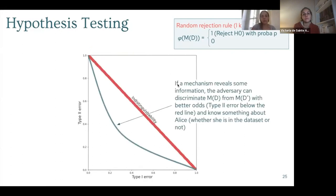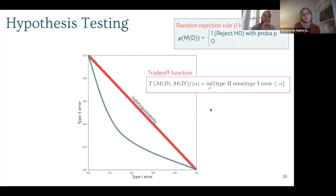If you know something about the dataset, your error may decrease. The lower bound of the achievable errors is called the trade-off function, and this exactly characterizes the privacy loss of a mechanism.